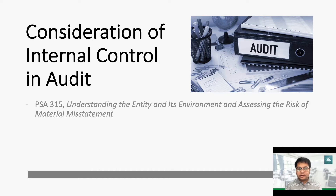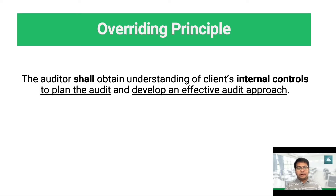For the first section, we will cover the auditor's consideration of the client's internal control system, referencing PSA 315: Understanding the Entity and Its Environment and Assessing the Risk of Material Misstatement. The overriding principle in this part of our audit is for the auditor to obtain an understanding of the client's internal control to plan the audit and develop an effective audit approach.